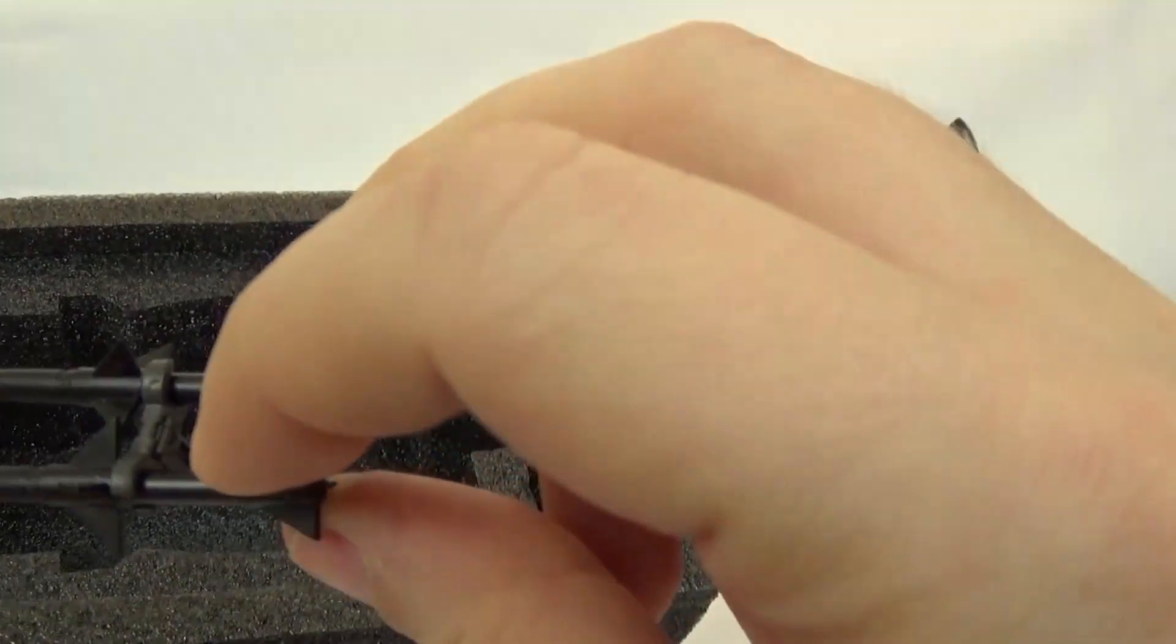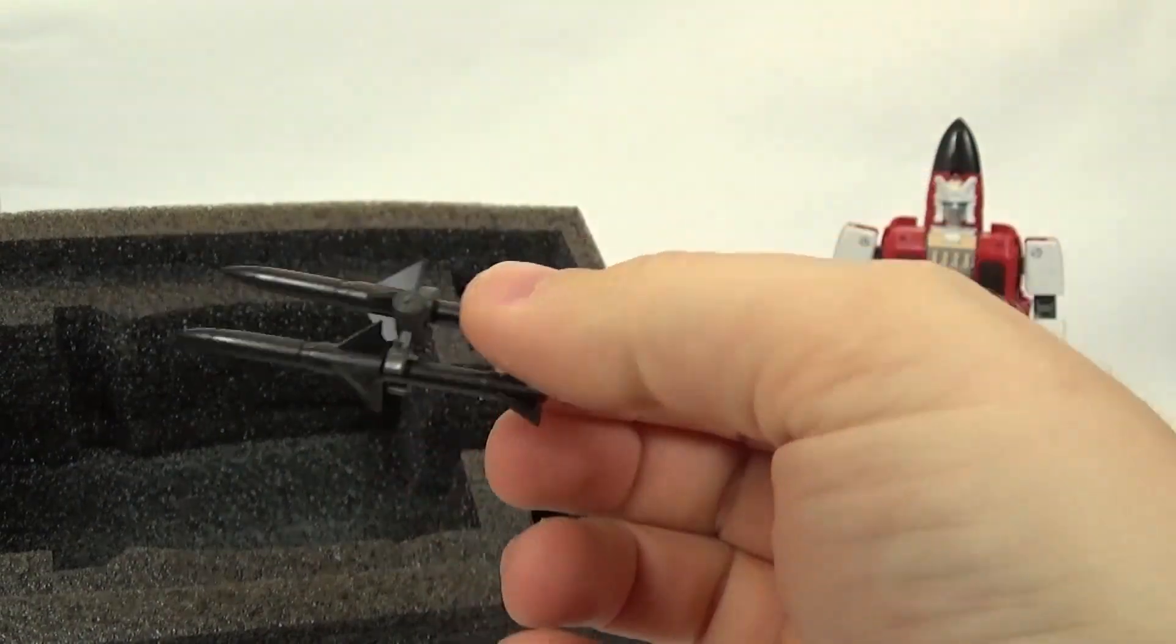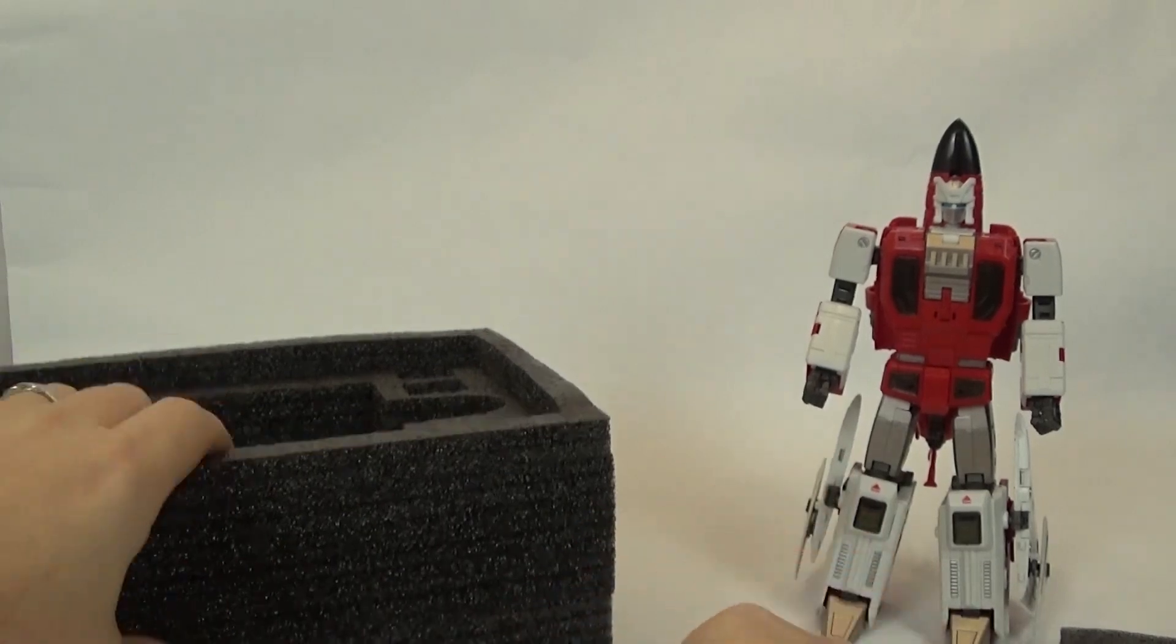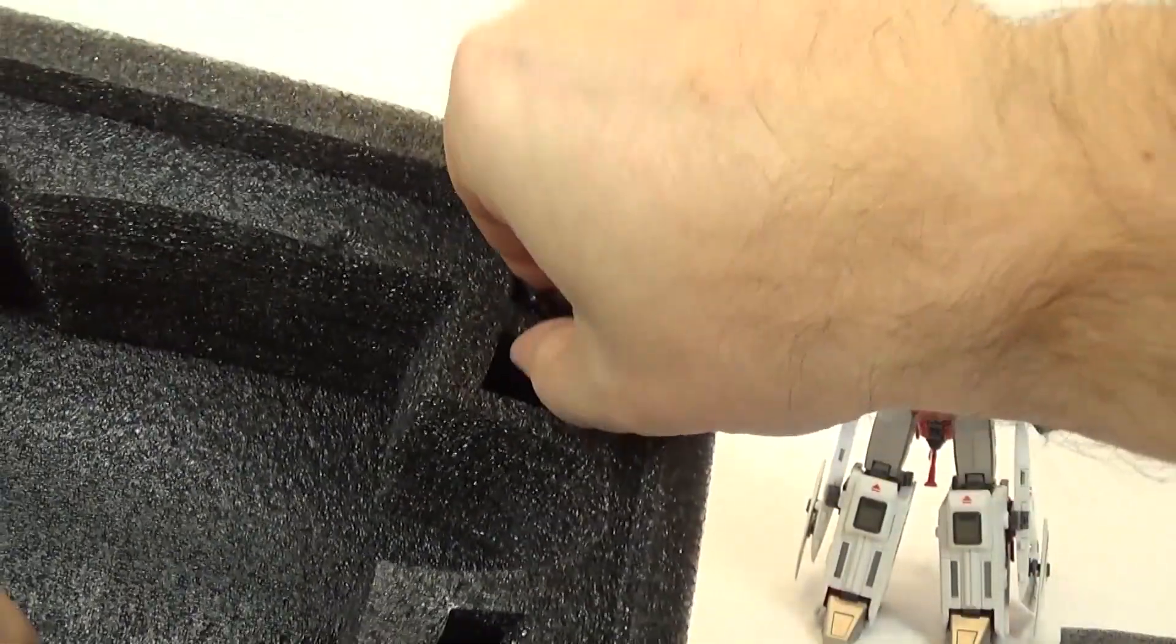And then you also get the missiles. But there you have the missiles. Again, they're all just black plastic, and then they clip onto this gray piece right there. But they're done fairly well.